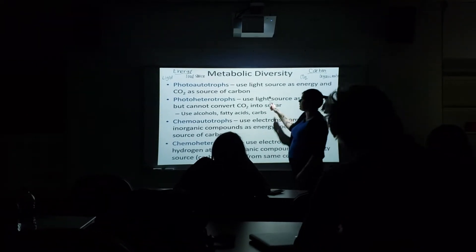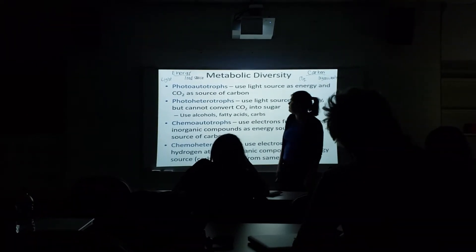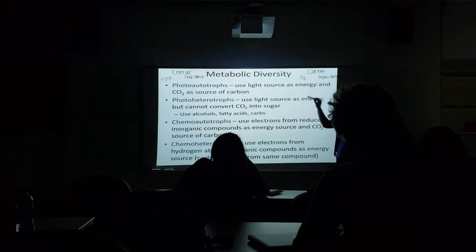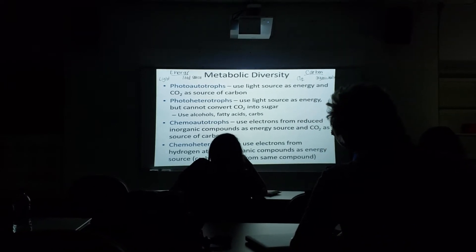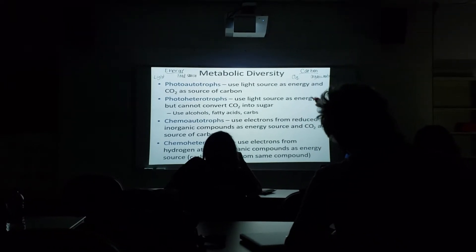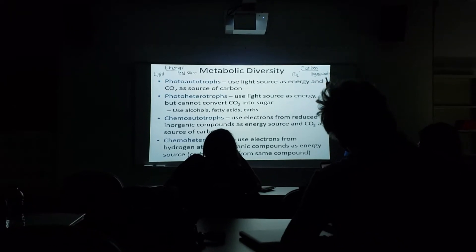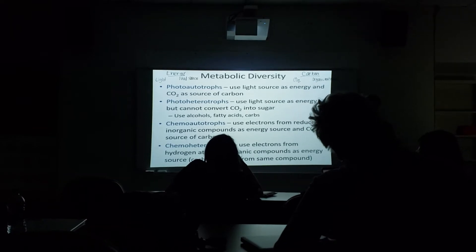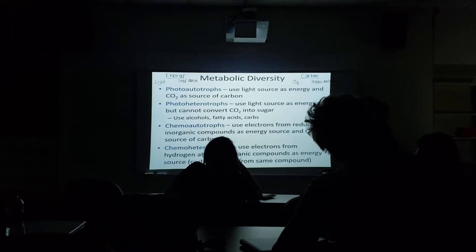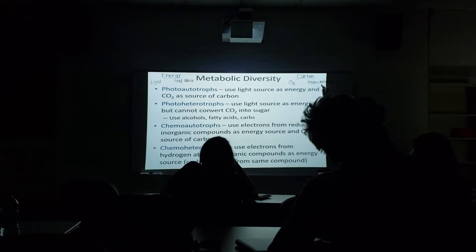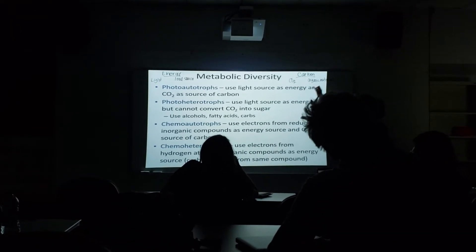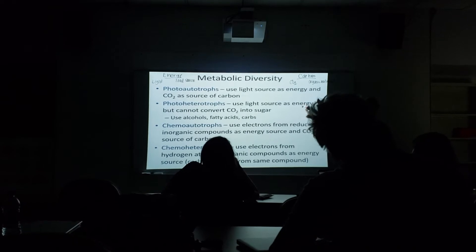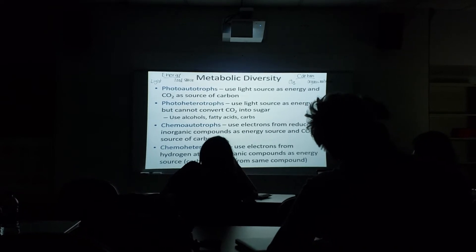Photo-heterotrophs are going to use light for their energy, but they can't just take carbon dioxide and turn it into a sugar. They're going to have to have some organic material — an alcohol, a fatty acid, or a carbohydrate — for their carbon source. Those are photo-heterotrophs, and there are bacteria that act like that.